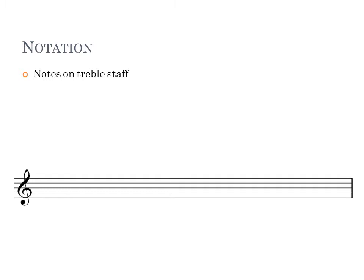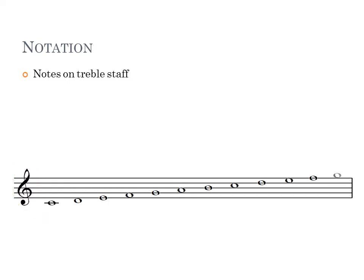On the different lines, we have certain note names in certain places, but that depends on whether we're dealing with a treble staff or a different type. What we look at now is the treble staff. We recognize it by having this symbol at the beginning. If you have this symbol at the beginning, it means it's a treble staff, and we will find the notes in the same specific places always.